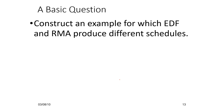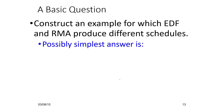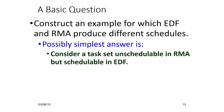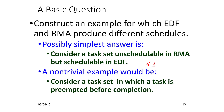Can we construct an example where EDF and RMA produce different schedules? The simplest answer is to consider something not schedulable in RMA but with utilization ≤ 1. In that case, it will be EDF schedulable but not RMA schedulable. A non-trivial example: a task is preempted before completion by a higher priority task, causing it to miss its deadline in RMA, but in EDF it does not miss its deadline because EDF goes by deadline scheduling and the task finishes before its deadline.